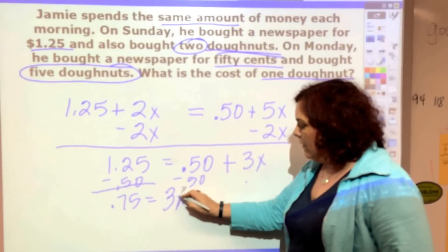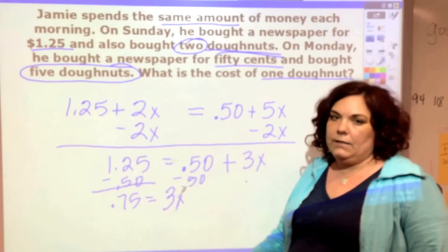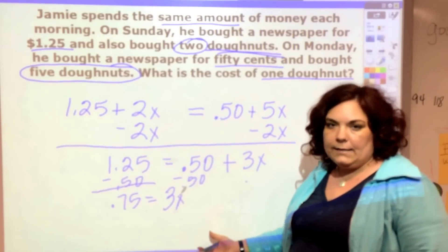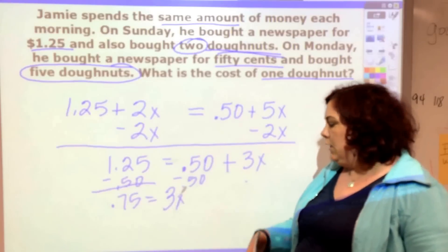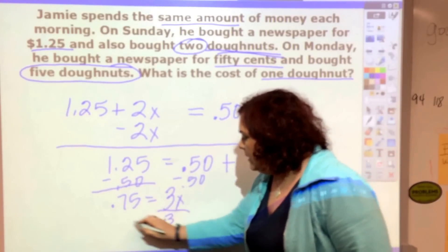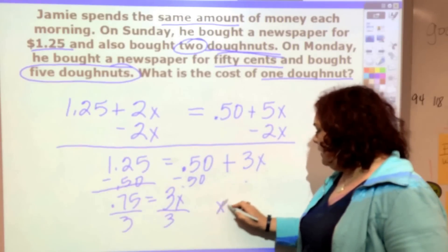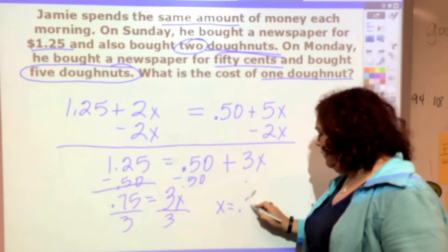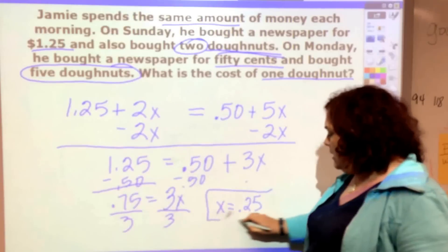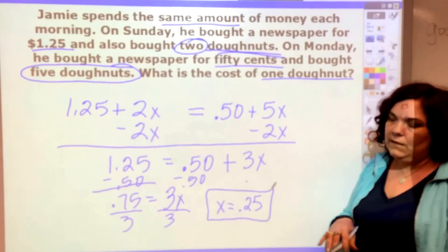So I get 75 cents is equal to 3X. Three quarters, three X's — so what is each X worth? Divide by 3 on both sides. X equals 0.25, and that means each donut was worth 25 cents.